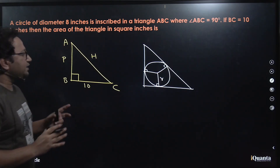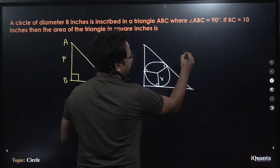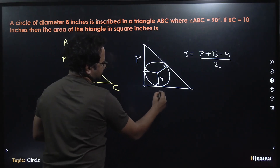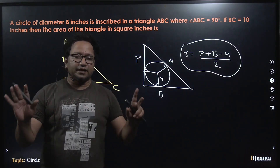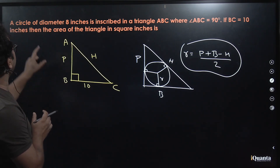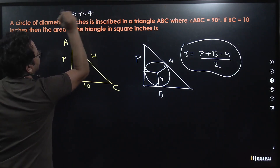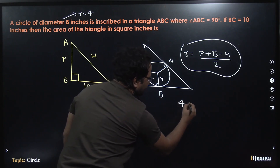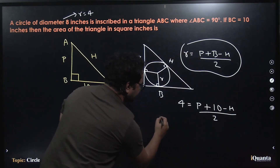For right-angled triangles specifically, there is an important formula: the inradius r = (P + B − H) / 2, where P is the perpendicular, B is the base, and H is the hypotenuse. Keep in mind this formula applies only to right-angled triangles. The diameter is 8 inches, so the radius r = 4. With B = 10, we substitute: 4 = (P + 10 − H) / 2.